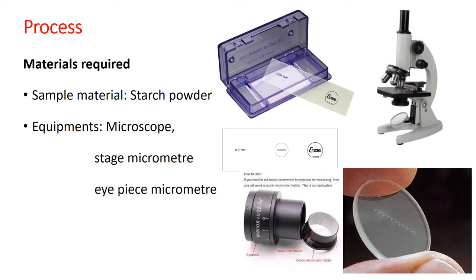Another equipment required is the eyepiece micrometer, which is similar to a normal eyepiece but fitted with an additional scale etched with markings from 0 to 100. To differentiate: the stage micrometer has no numbers — just lines — whereas the eyepiece micrometer has numbers 0, 10, 20, etc. You can also rotate the eyepiece micrometer to place the scale horizontally, vertically, or tilted depending on the particle to be measured.